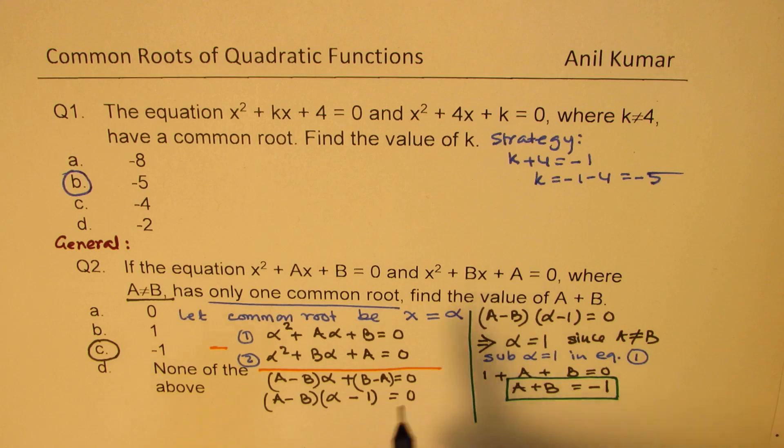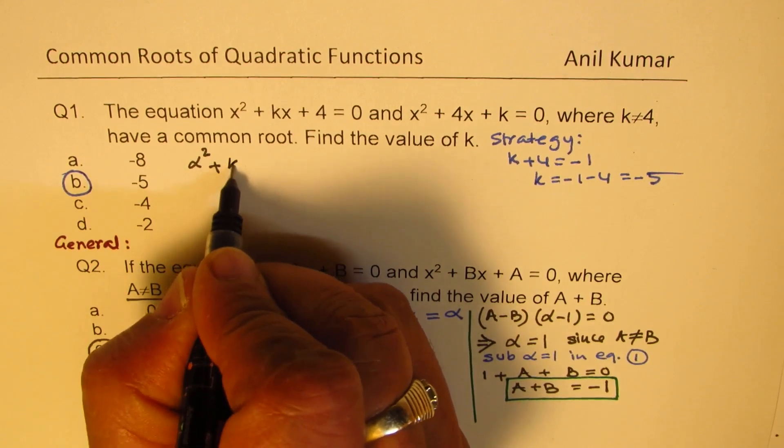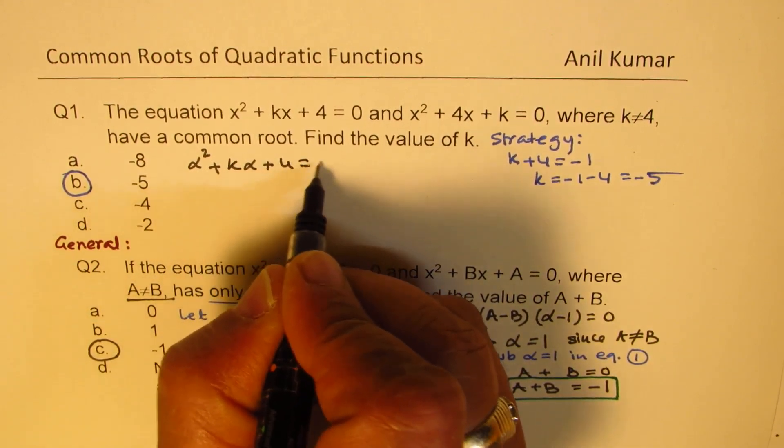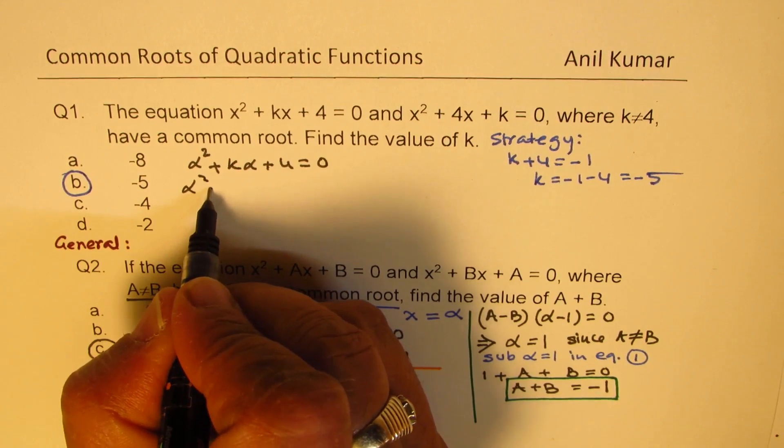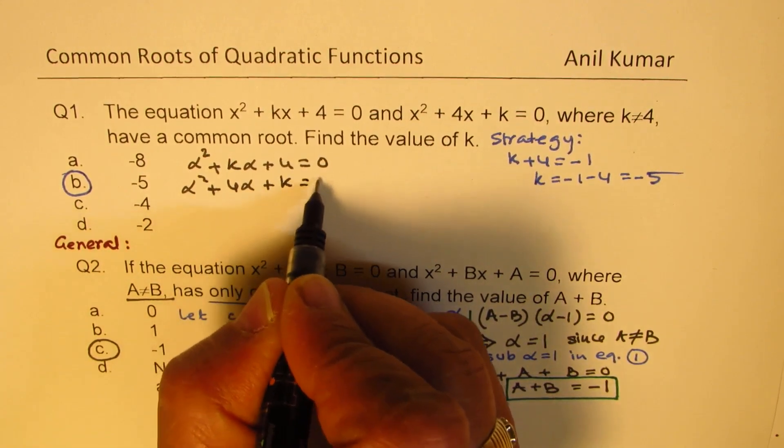Well, otherwise, what you need to do is you follow the same process, right? You can again say that α² + kα + 4 = 0. Here you get α² + 4α + k = 0.